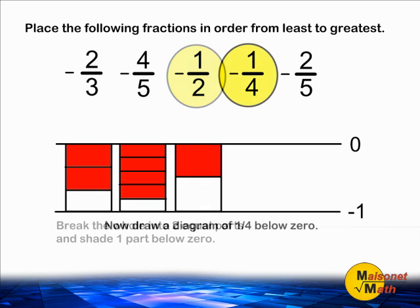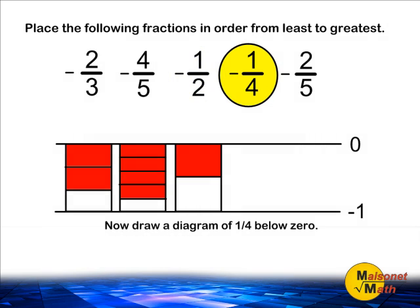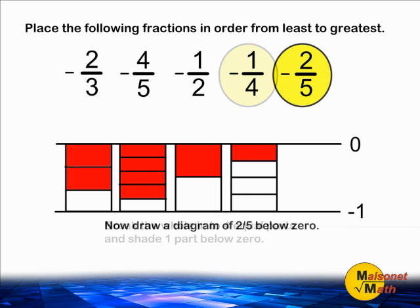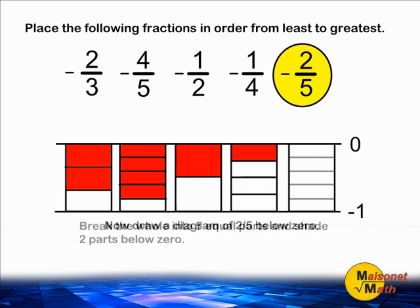Next, we take one whole and divide that into four equal parts and then we just shade one unit below zero. And last, we take our last whole box and divide it into five equal parts and then we shade two parts underneath zero.